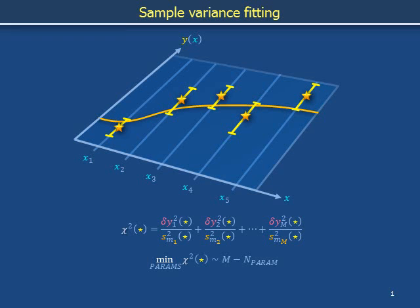In this video, we will conceptually introduce sample variance curve fitting. We will become familiar with plots of curves fitted to data with error bars, familiar with the definition of chi-squared, and familiar with the idea that chi-squared minimized during curve fitting often turns out to have a value in the neighborhood of the number of plotted points minus the number of fitting parameters.